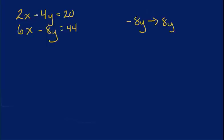Well, that minus sign represents this 4 as a negative as well, so you don't have to really get confused on that. But what I'm going to do is multiply everything by whatever — let me rephrase this. What number would I have to multiply my negative 4y by to get positive 8y?